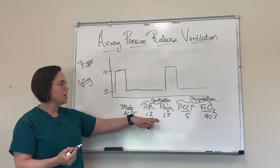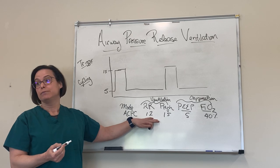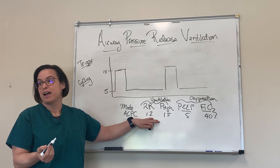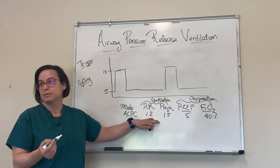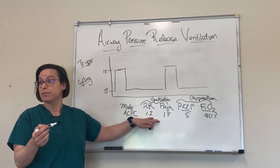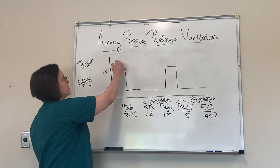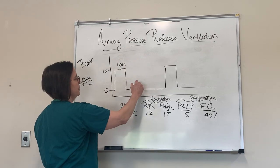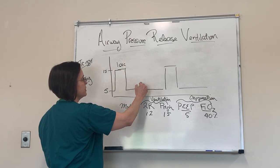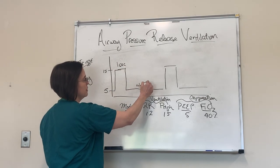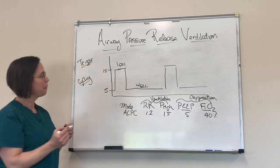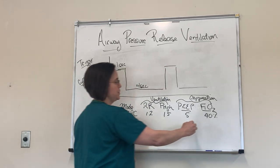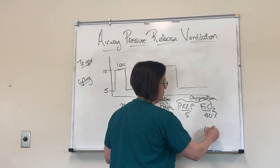So let's say for a respiratory rate of 12, that's five seconds per breath. Let's say this is one second up and four seconds down. So that's our I to E ratio of one to four.